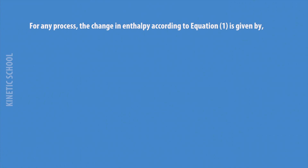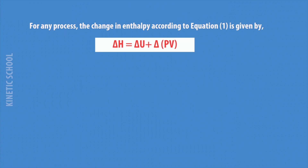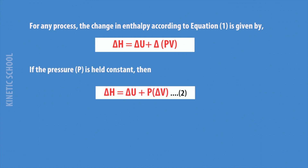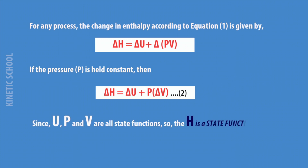For any process, the change in enthalpy is given by: delta H equals delta U plus delta(PV). If pressure is held constant, then delta H equals delta U plus P times delta V. Since internal energy U, pressure P, and volume V are all state functions, enthalpy H is a state function too.